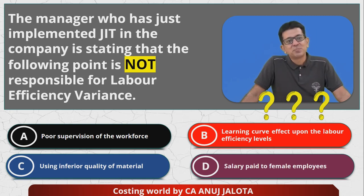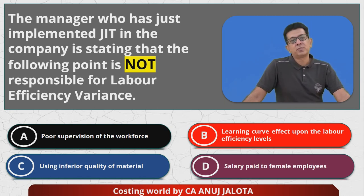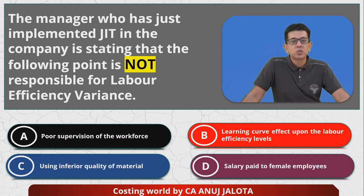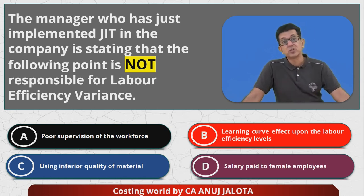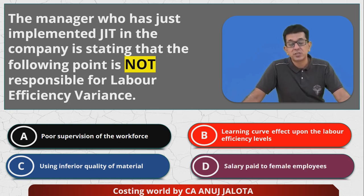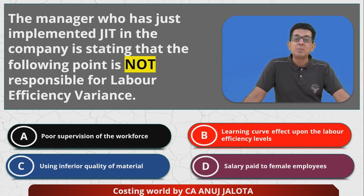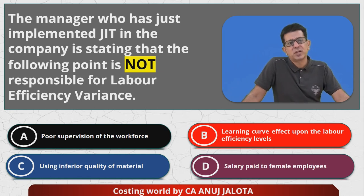We have to find what is NOT responsible for labor efficiency variance. Option A — poor supervision: if you do not supervise workers properly, they will work slower and efficiency variance will become adverse, so A will affect it. Option B — learning curve effect: if workers learn faster they become more efficient, so B can also be a reason for labor efficiency variance.